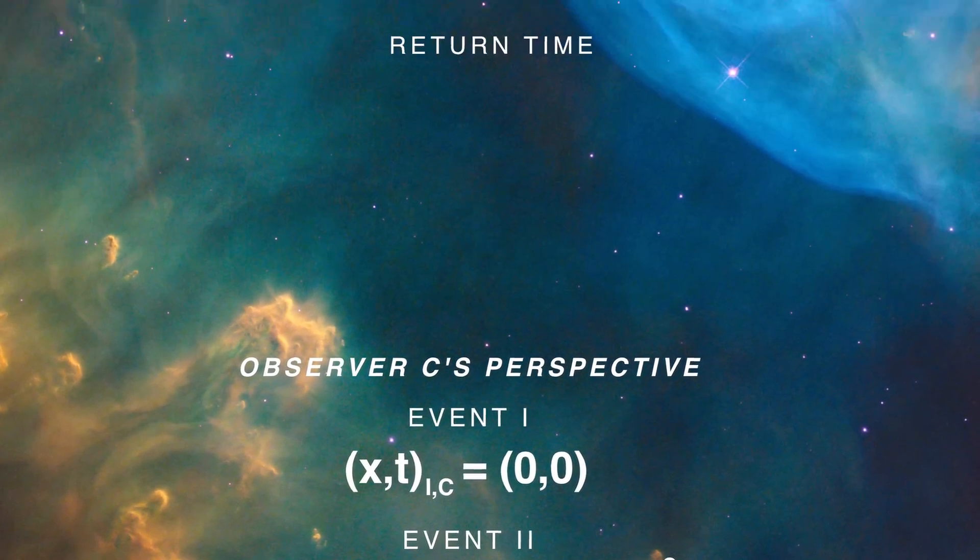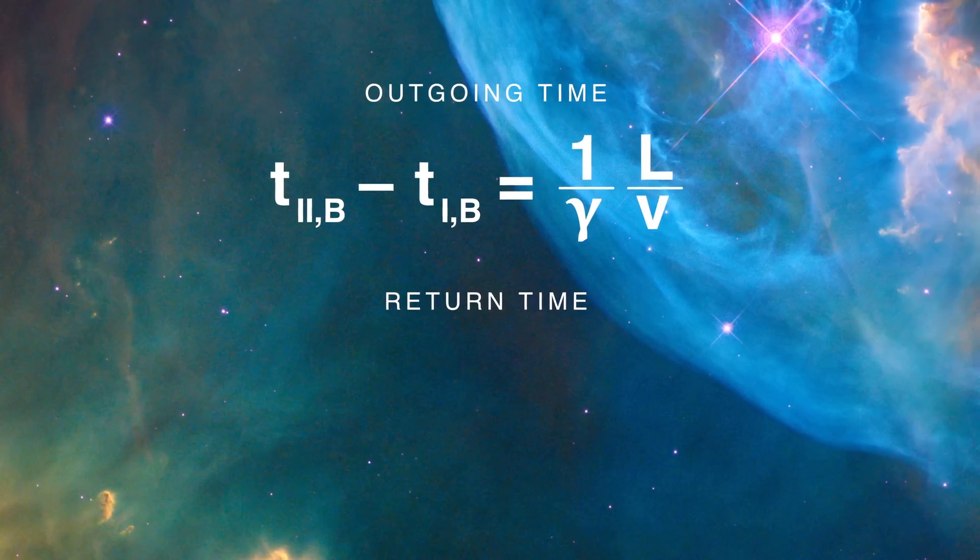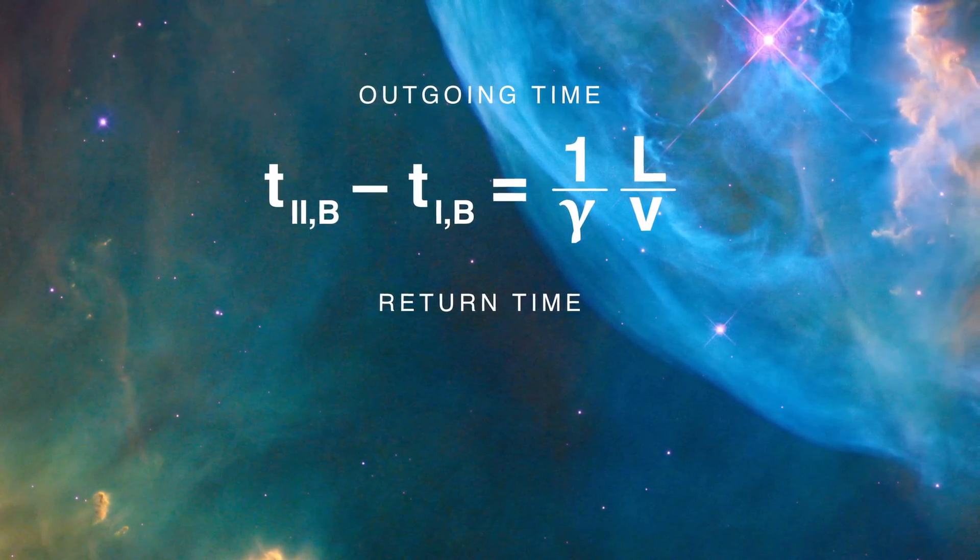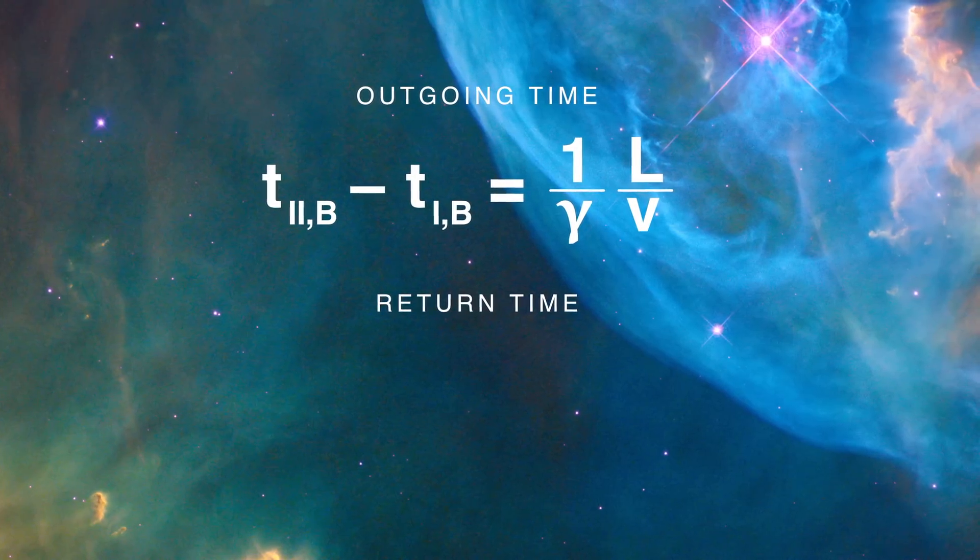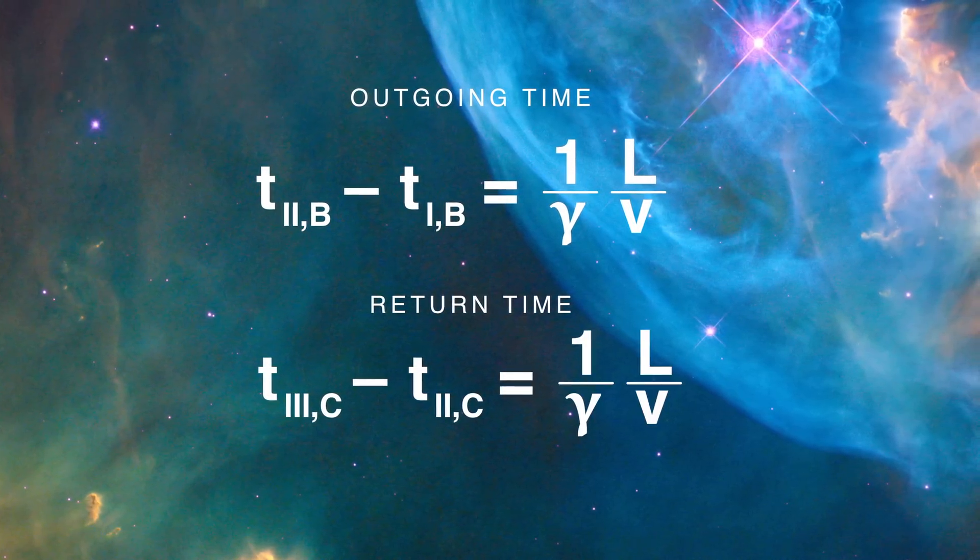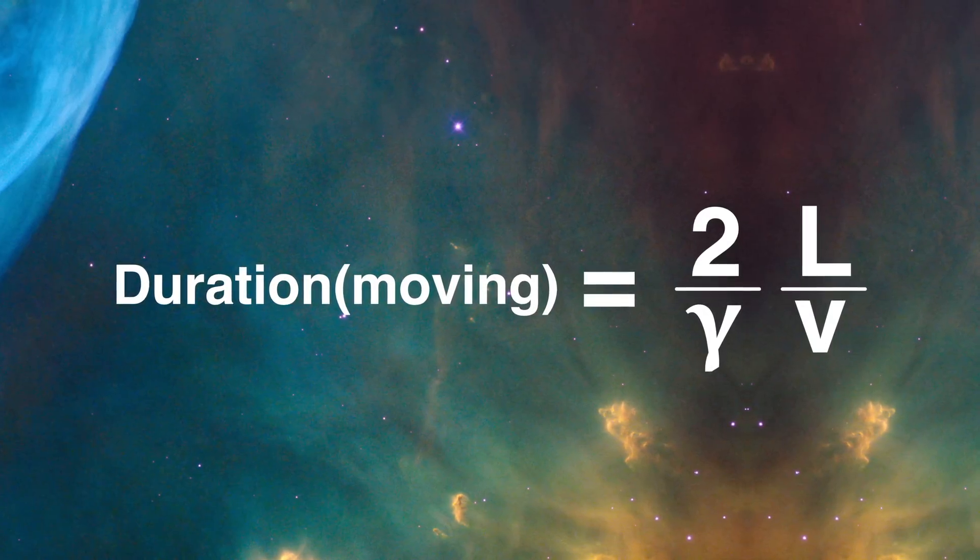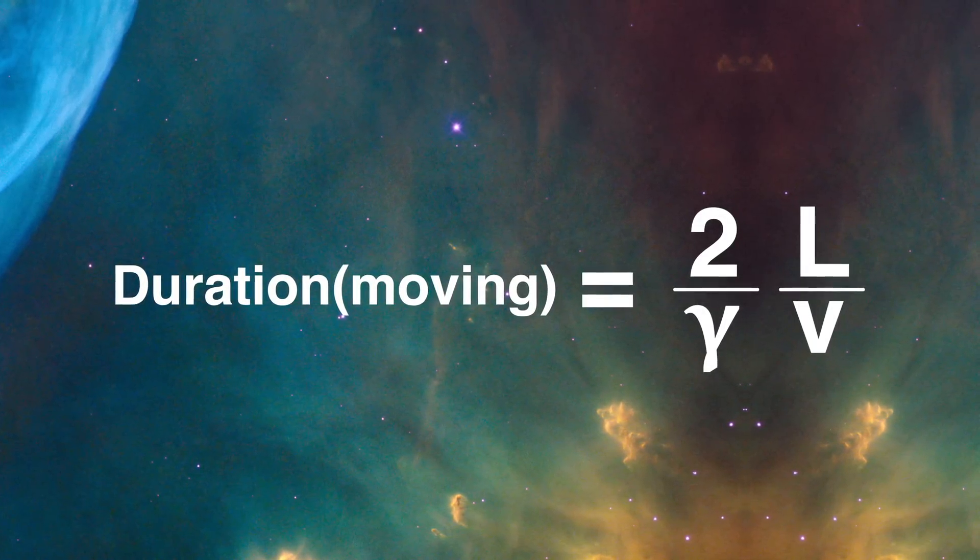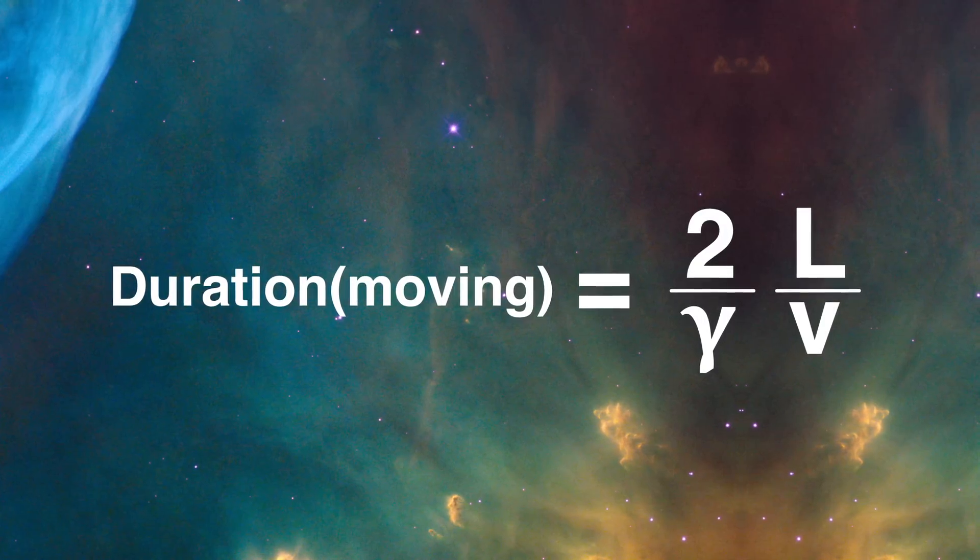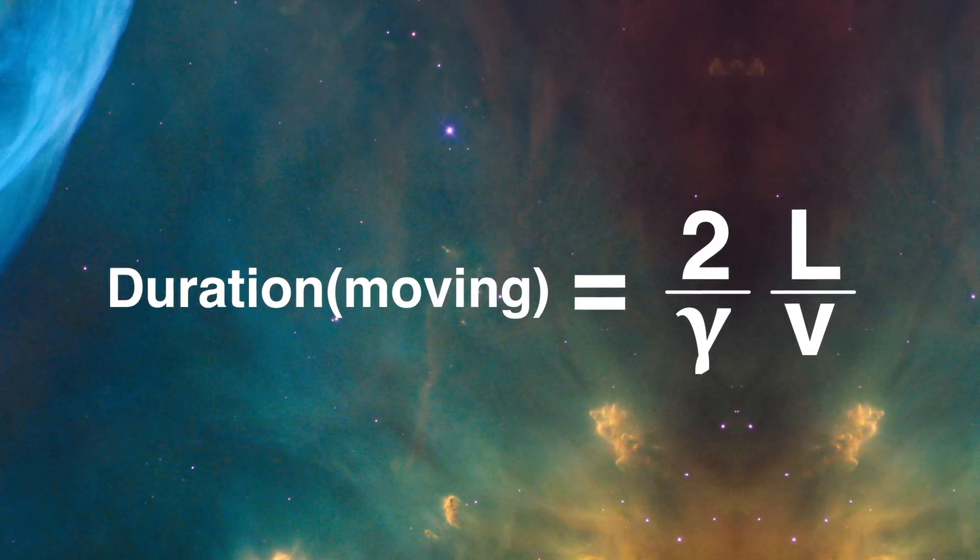Okay, so that's the hard part. Now we just have to figure out the total duration. We do that by subtracting what observer B's clock was at event two and event one. We then need to do the same thing for observer C except for event three and event two, and we get this here. If we add the two durations for the outgoing trip and the return trip, we get the total duration for moving observers and we find that the moving duration was equal to two divided by gamma times L over V.